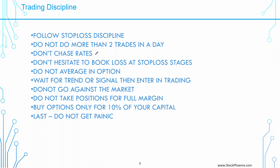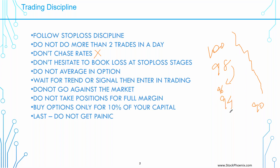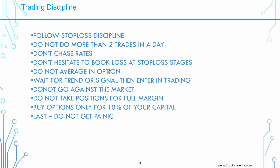Do not chase rates. If you were trying to buy a stock at 300 rupees and it suddenly jumps to 305, ignore the trade — don't run behind the stock. Do not hesitate to book at stop loss stages. If you bought at 100 with a stop loss at 98, don't shift your stop loss down to 96, because a stock trending down will keep coming down to 90. You will still hit the stop loss. Try to exit at the early stage. Do not average in options — averaging in options is a crime.